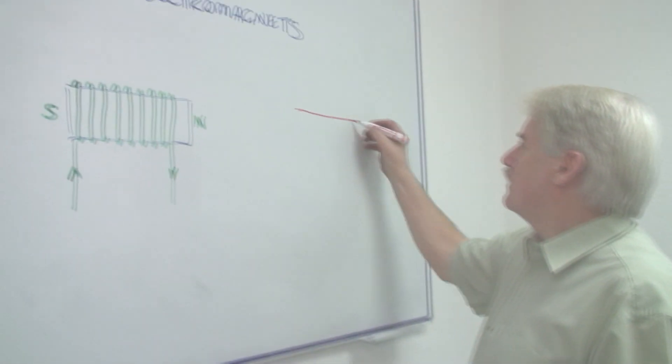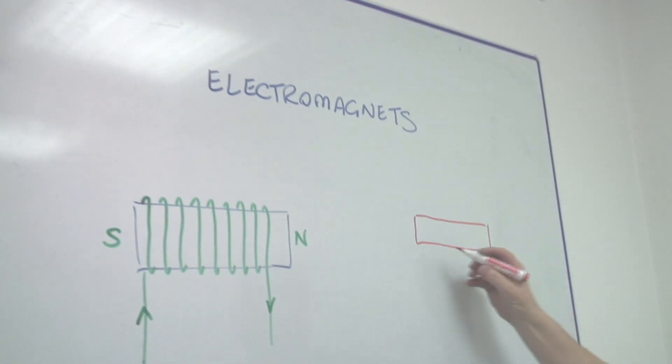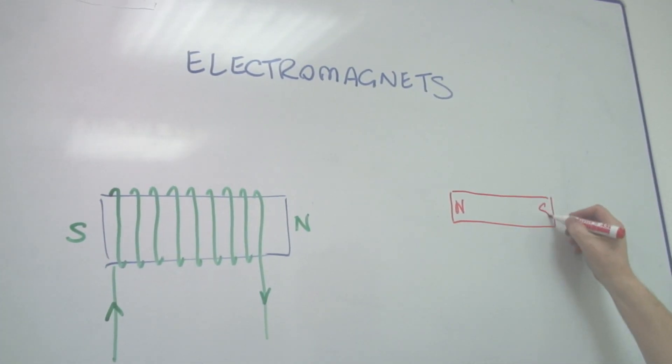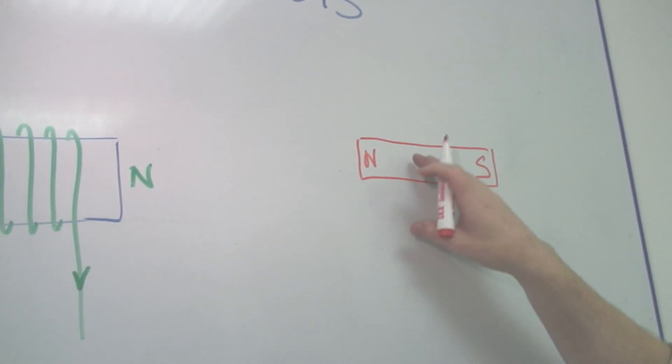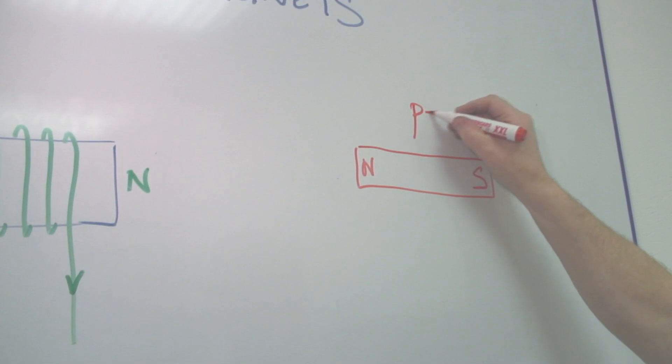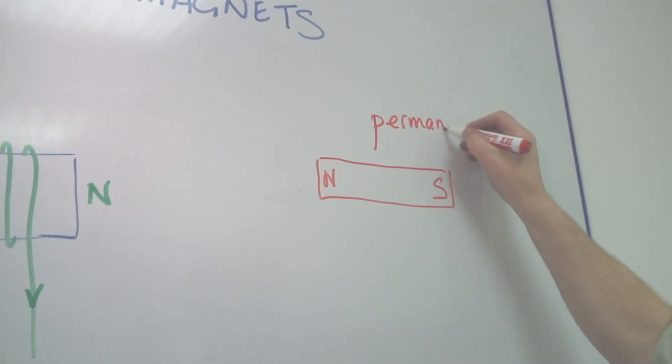A magnet is a piece of metal and it has one end as we know that's north and the other is south. This bar, it's called a bar magnet, this bar of course is a permanent magnet. So we call this a permanent magnet.